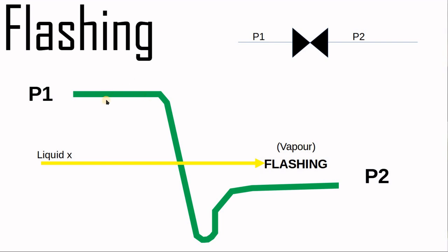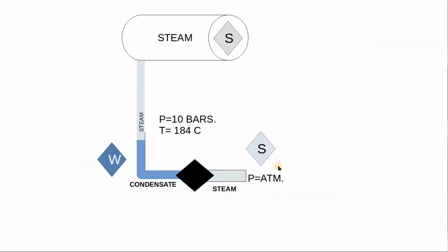Regarding flashing: liquid enters the valve inlet but exits completely as vapor. You may have seen this in a plant — the steam trap, specifically a thermodynamic steam trap. Steam condensate is collected and goes to the steam trap. If it discharges to atmosphere, you can see it exit as vapor. What enters is condensate in liquid phase, but when it crosses the steam trap to atmosphere at 1 atmospheric pressure while the temperature is about 184°C (because the supply pressure is 10 bar), the condensate immediately changes to vapor.